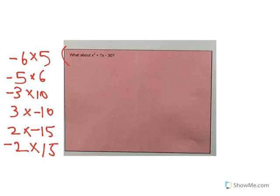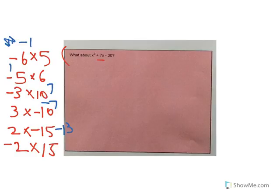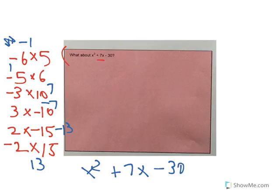We need to find the pair that adds together to reach 7. Negative 6 plus 5 gives negative 1; negative 5 plus 6 gives positive 1; negative 3 plus 10 gives 7 — so that's probably it. But note: 3 plus negative 10 gives negative 7, which is a really important distinction. Negative 2 plus 15 gives 13; 2 plus negative 15 gives negative 13. So the only one that gives us a positive 7 is negative 3 and positive 10.